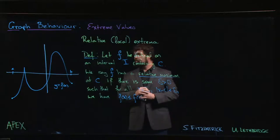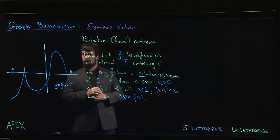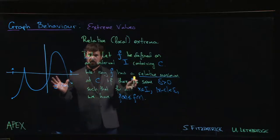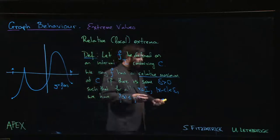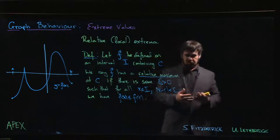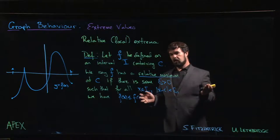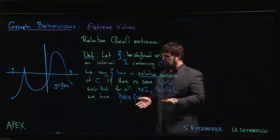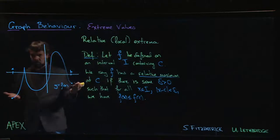So far we've introduced the idea of an absolute or global extreme value and we've stated the extreme value theorem, which guarantees the existence of these extreme values under some reasonable conditions, namely that our function is continuous and that our domain is a closed interval. So here's the graph of a function which is defined on a closed interval.